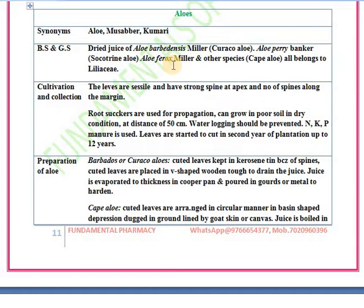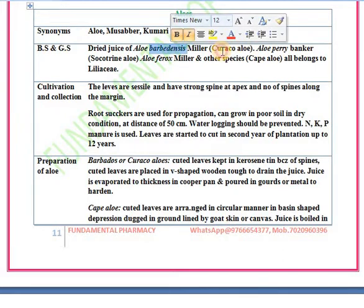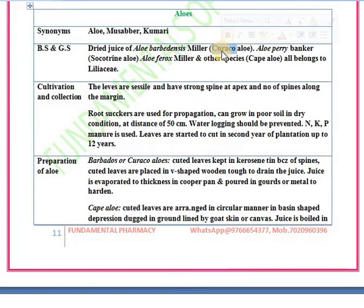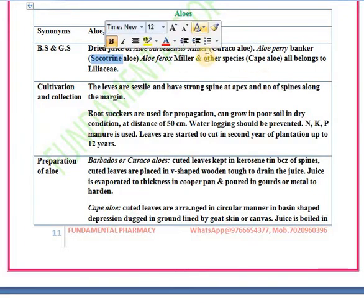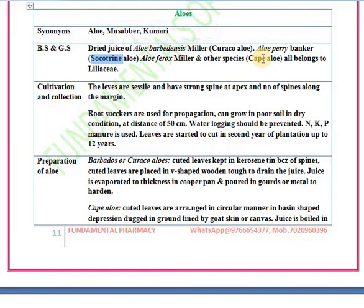Aloe barbadensis, Aloe perryi, and Aloe ferox all belong to family Liliaceae. Aloe barbadensis is known as Curacao aloe, Aloe perryi is known as Socotrine aloe, and Aloe ferox is known as Cape aloe.